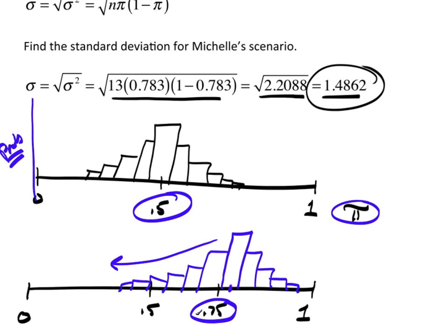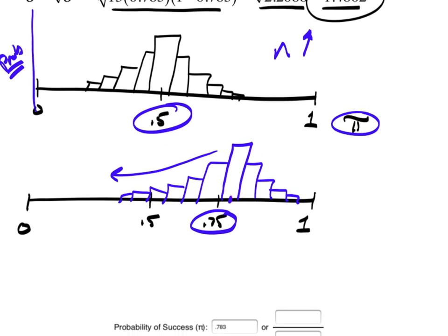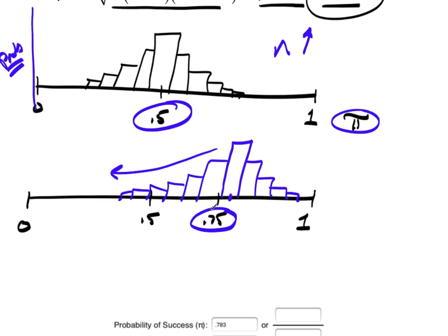Something else we look at in another chapter is kind of cool. As N increases and starts getting really big, we're going to end up with a situation where I will still get symmetry. Even if the probability of success is up at something like 0.95, for large enough N, I would still have a very tight, symmetric sort of distribution.